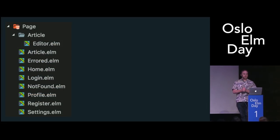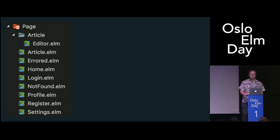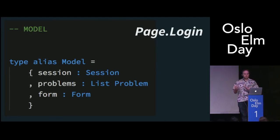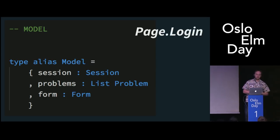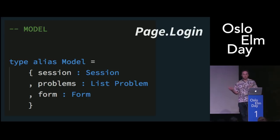Here are the modules in the page directory — basically all of the pages in the app: article, home, login, not found, profile, et cetera. Each of these corresponds to one of the different routes roughly on the page. I'm going to walk through the login page as an example of how one of these modules is structured. Pretty much all of them start off with model — model is the first thing that appears in each of these modules. Each of these pages does have its own model, view, and update, which is something I think in general is a good fit for single page apps.